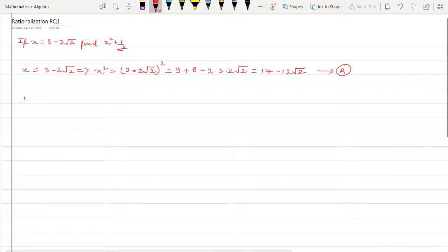x is equal to 3 minus 2 root 2, which means 1 upon x is equal to 1 upon 3 minus 2 root 2. Now the moment I see a radical in the denominator, I'll have to rationalize it. So this will become equal to 1 upon 3 minus 2 root 2 multiplied with 3 plus 2 root 2 divided by 3 plus 2 root 2.